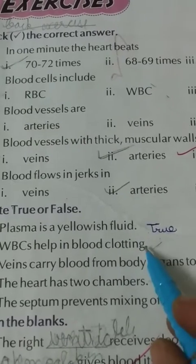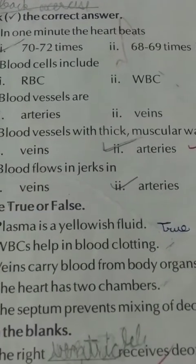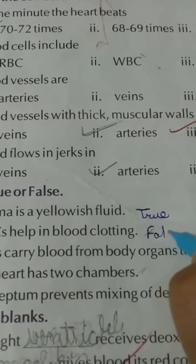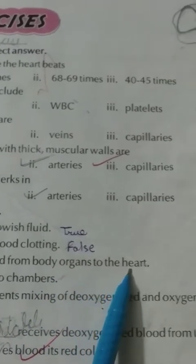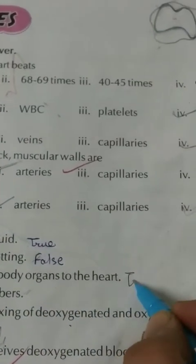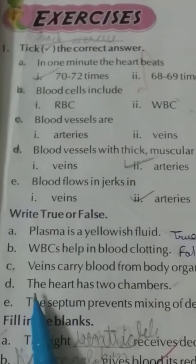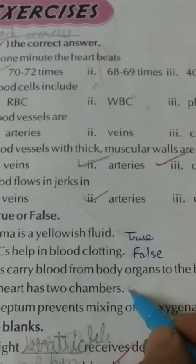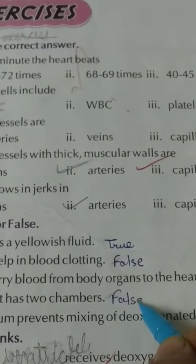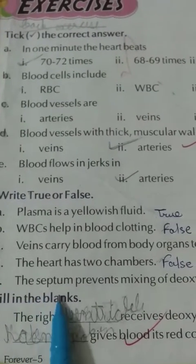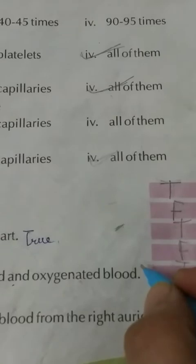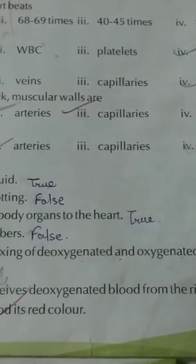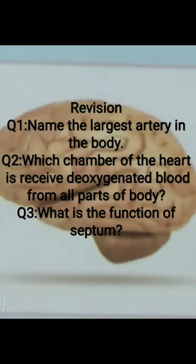WBC helping blood clotting — false. Veins carry blood from body organs to the heart — true. The heart has two chambers — false; the heart has four chambers. The septum prevents the mixing of deoxygenated and oxygenated blood — true.